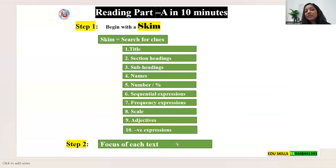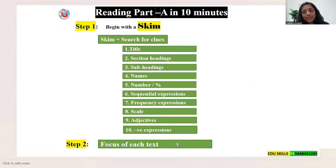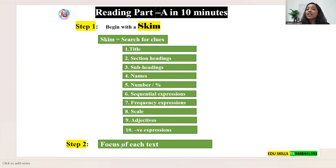When you skim the text you need to identify the focus of each text and find out the sequence of the topic. For example, Text A might be definition, Text B assessment, Text C treatment, Text D monitoring. You need to find out what each text focuses on and write those focus notes in your text booklet — not in your answer booklet.